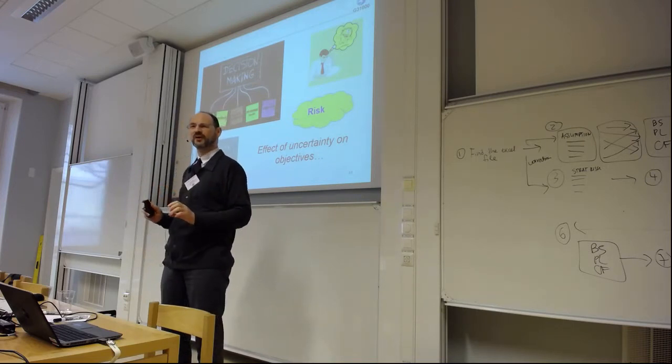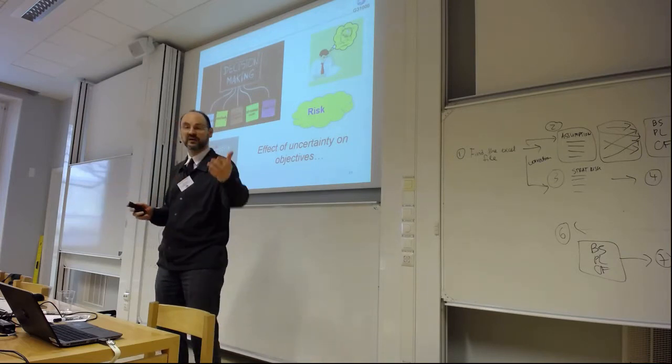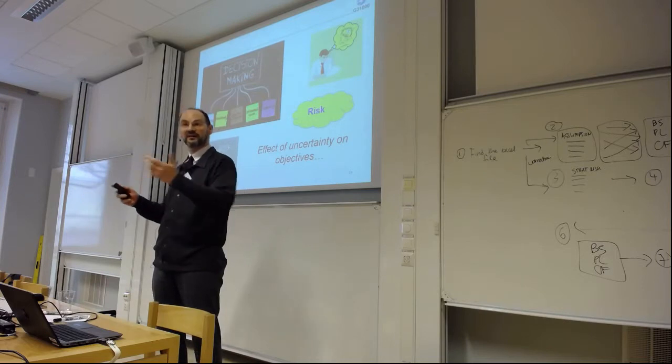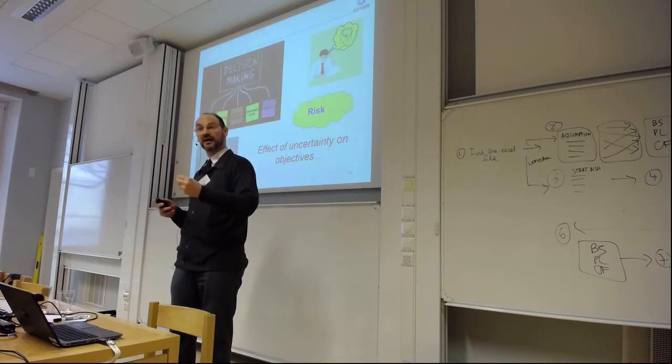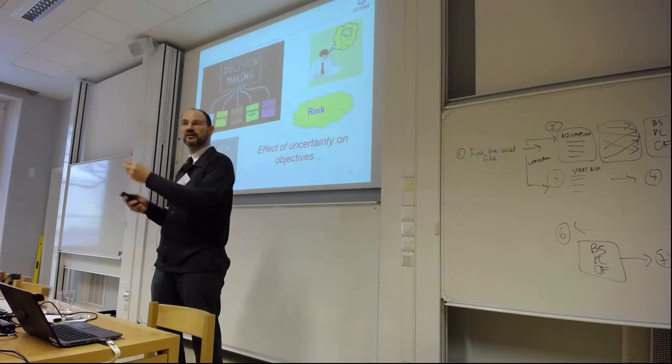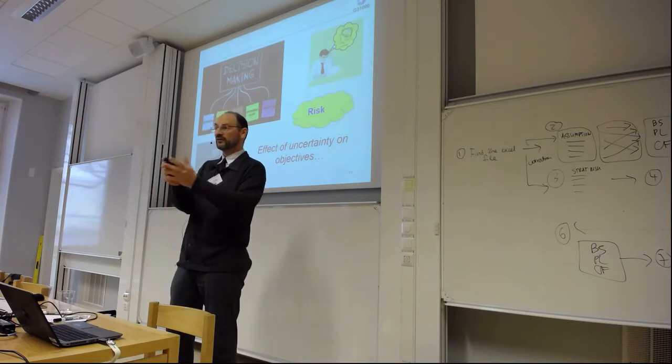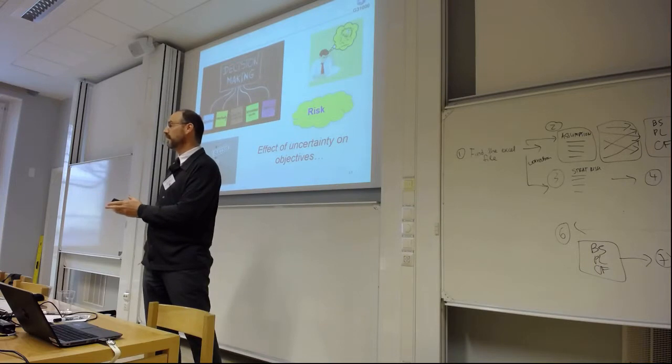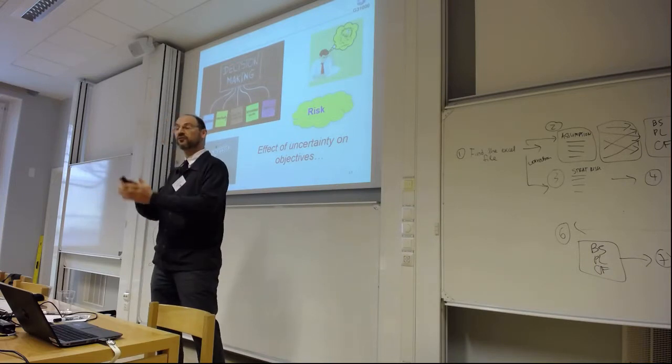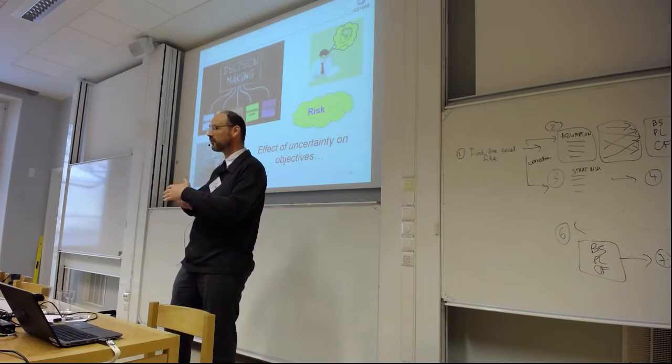Now in ISO we redefine risk as effect of uncertainty on objectives. We start with objectives - health and safety, project management, finance, etc. You don't know whether you can achieve it or not, so there is uncertainty associated with objectives. The effect of uncertainty is called risk. We have moved from a world where risk was associated with an event to something linked to objectives. That's quite fundamental - you cannot talk about risk if you have not defined the objective.